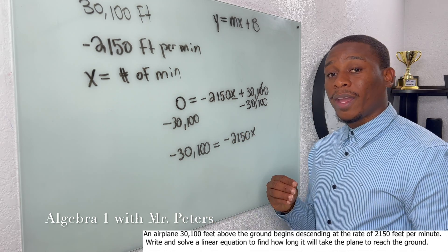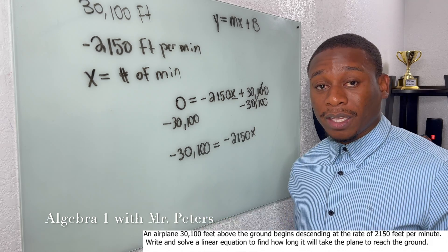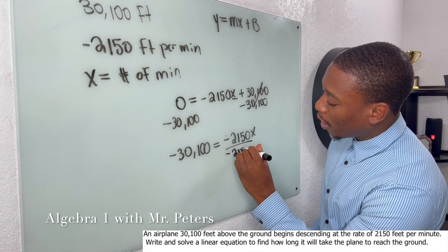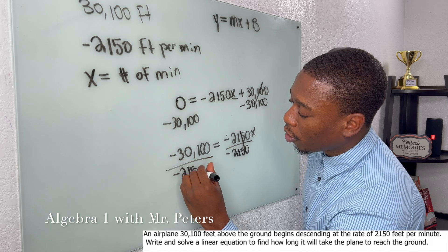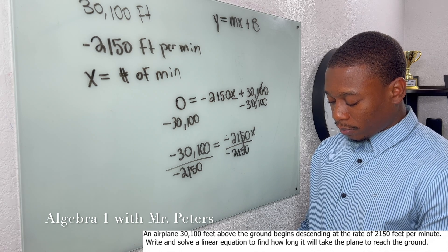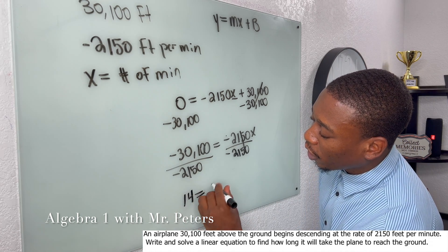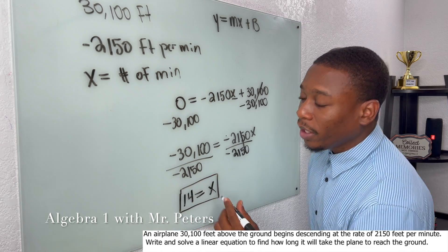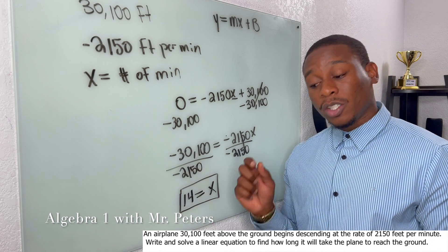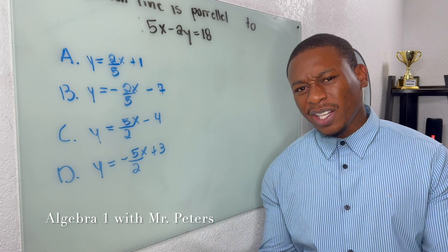When we see these two negatives, we know that once we divide, x is going to be positive — because time cannot be negative. That's a trick they'll always try to throw in. Dividing both sides by −2150, we get x = 14. That 14 represents minutes, so it takes 14 minutes for the plane to descend from 30,100 feet to the ground.